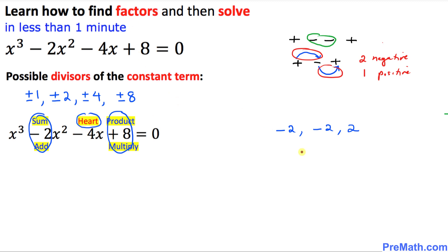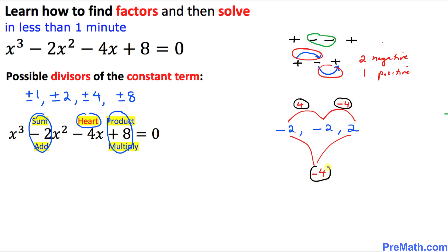For the heart step: multiplying the two end numbers, negative 2 times positive 2, gives negative 4. Multiplying negative 2 times negative 2 gives positive 4. Multiplying negative 2 times positive 2 gives negative 4. Adding these three pairwise products: 4 plus negative 4 plus negative 4 adds up to negative 4. Since this shape looks like a heart, I call this number the heart.